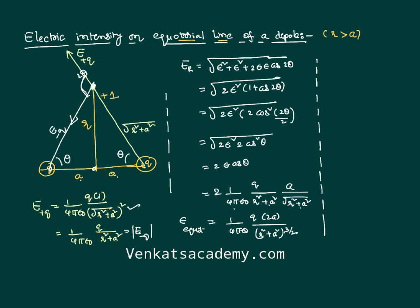For an approximation, since it is a dipole the separation distance is much smaller than r, so r >> a, meaning a² can be neglected compared to r². Therefore E on the equatorial line becomes 1/(4πε₀) · q·2a / r³. Since q·2a is the electric dipole moment p — a vector directed from minus q to plus q — this simplifies to E = 1/(4πε₀) · p/r³.